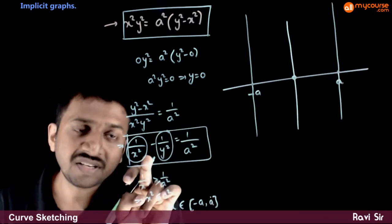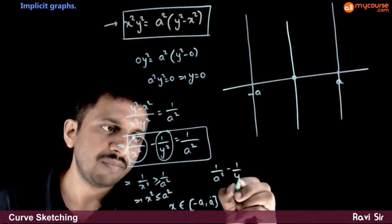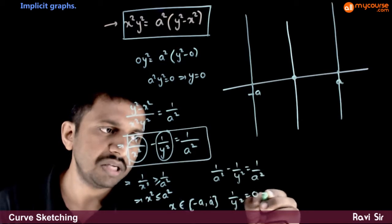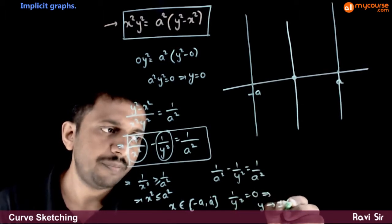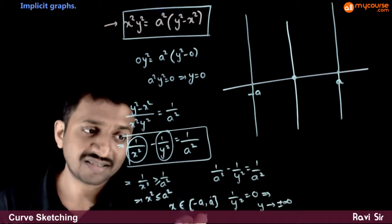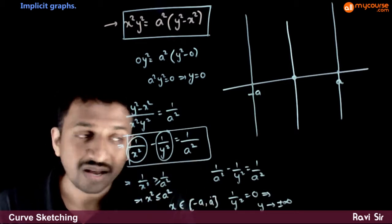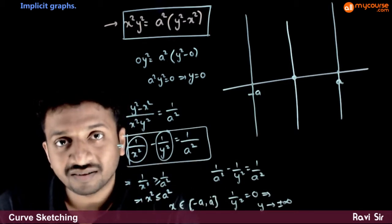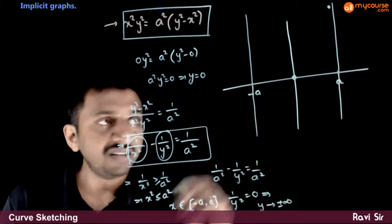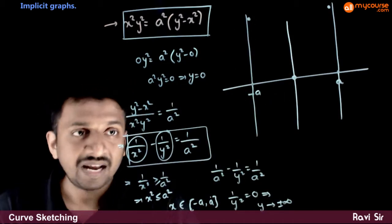Now, what happens when x = a? We get 1/a² - 1/y² = 1/a², so 1/y² = 0, which implies y goes to ±infinity. So as x goes to +a or -a (i.e., x² = a²), y goes to ±infinity. As x goes to +a, y goes to +infinity; as x goes to -a also, y goes to +infinity.